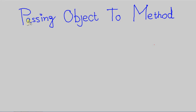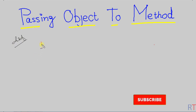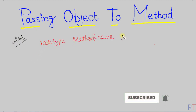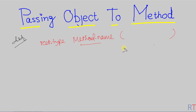In this video we are going to see how we can pass one object to a method as a method parameter. To do so we have to define the method, and while defining it, first we have the return type, then the name of the method, and in the parameter section inside the parenthesis we have to write the data type as the name of the class. For example, if this method is going to receive one object of the Student class, then the data type will be the name of the class, so we write 'student' and then the name of the variable, like 'studentA'.